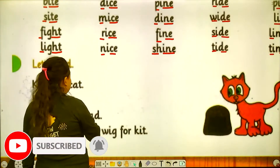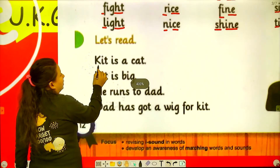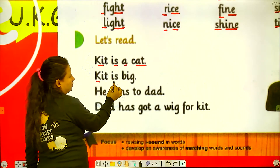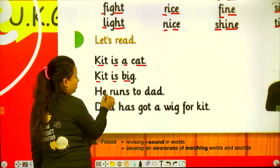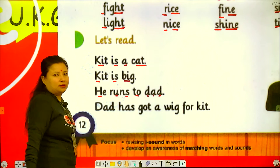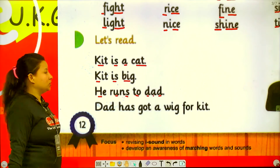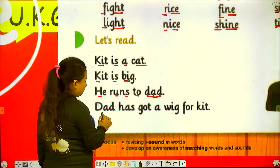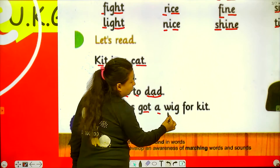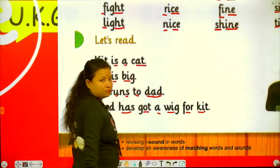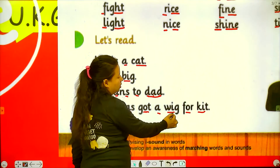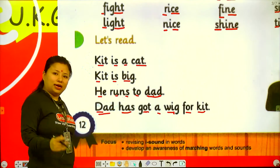So now it's time to read sentences. Kit is a cat. Kit is big. He runs to dad. Dad has got a wig for kit.